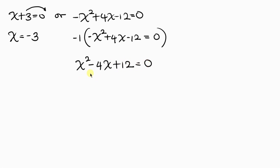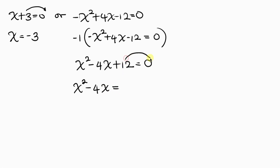This quadratic equation cannot be factorized, and I'm not going to use the quadratic formula. Instead, I'll use completing the square, because the coefficient of x is even. Using completing the square means we move the constant term to the right, so we have x squared minus 4x on the left equal to negative 12.